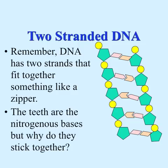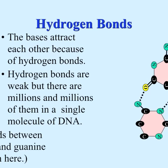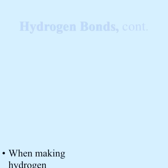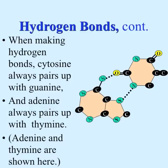What holds them together? Hydrogen bonds. The bases attract each other because of hydrogen bonds. Hydrogen bonds are weak, but millions and millions of them together hold a single DNA molecule very well. The bonds between cytosine and guanine are shown here (C to G). When making hydrogen bonds, cytosine always pairs with guanine, and adenine always pairs with thymine. In both cases, we have a double ring and a single ring pairing together.